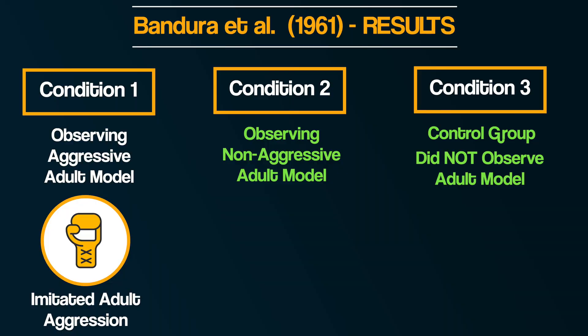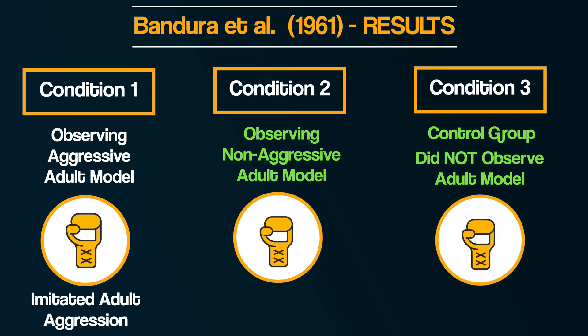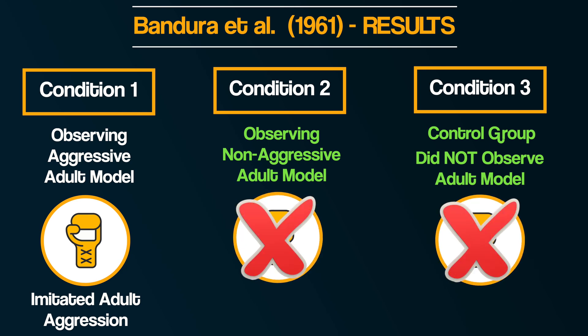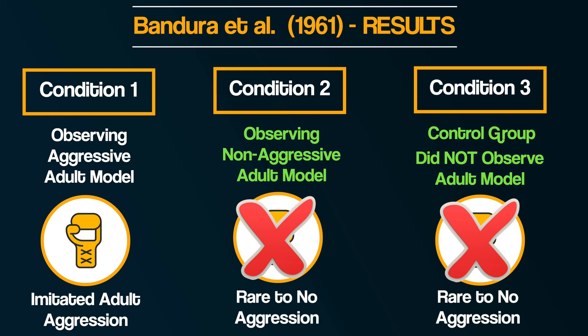In contrast, children in Condition 2 and the control group who observed a passive, non-aggressive model — and in the case of the control group, no model at all — rarely, if at all, demonstrated any physical or verbal aggression. Overall, this study demonstrates the powerful influence, particularly for children, that observing adult models can have on their learning of new behaviors and raises serious concerns about the implications for what children pick up from watching aggressive behaviors.